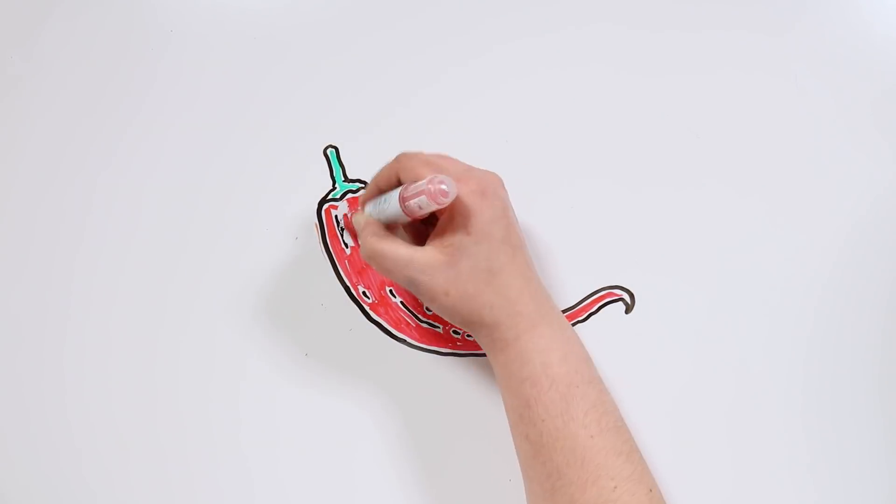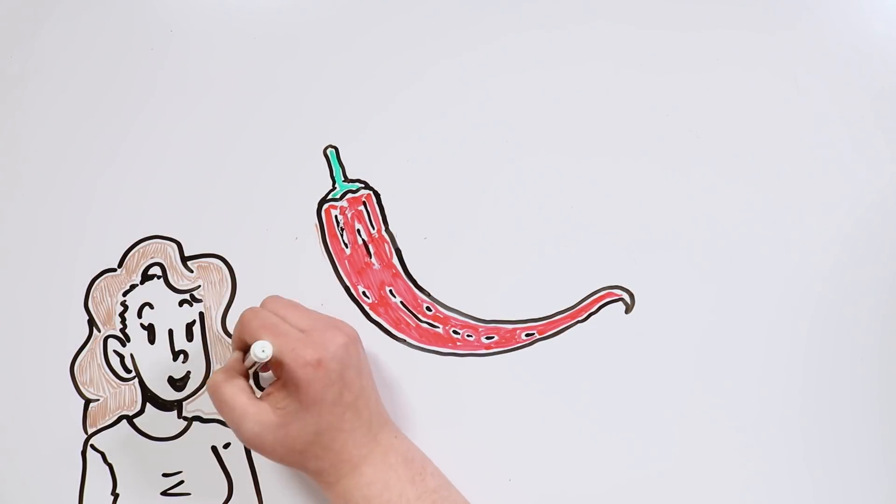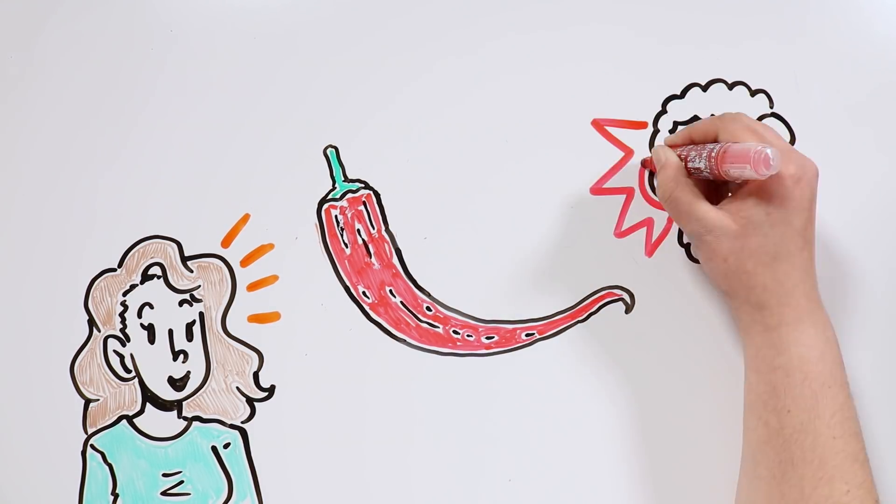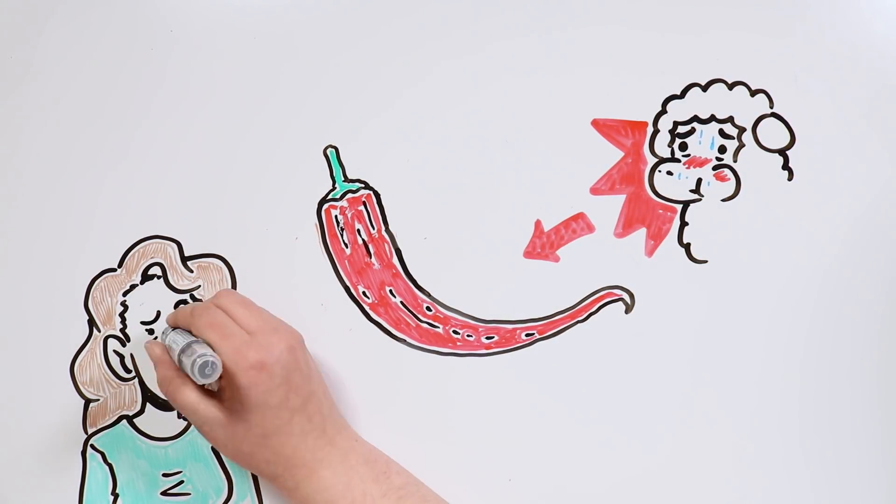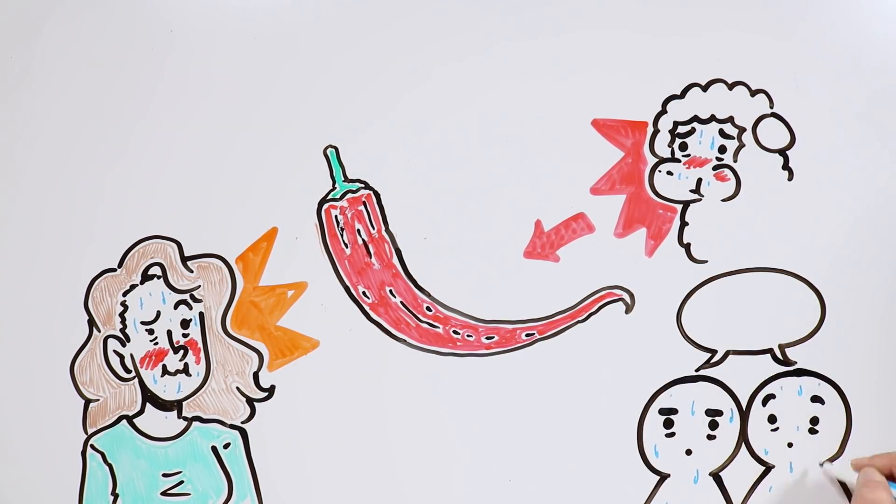However, one mammal is the exception to this rule: human beings! We are the only species who enjoys eating spicy foods and their effects. Herbivore mammals would only eat chili peppers by mistake, but in our case we love that suffering! Or wouldn't you like to eat a tasty and spicy enchilada right about now?